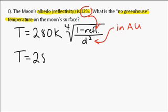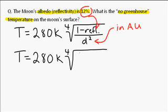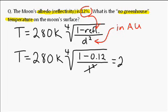So the temperature, I'm just going to rewrite this with all the numbers in place. 280 Kelvin times this fourth root, 1 minus, and 12% written in decimal format, 0.12. We're going to divide by 1 squared. 1 squared is just 1. And when we're dividing by 1, we get the same thing. So we can kind of just cancel that out. So we can rewrite this as 280K times the fourth root, 1 minus .12.